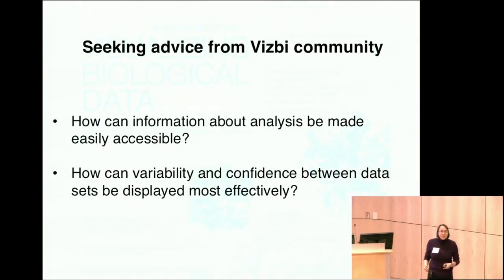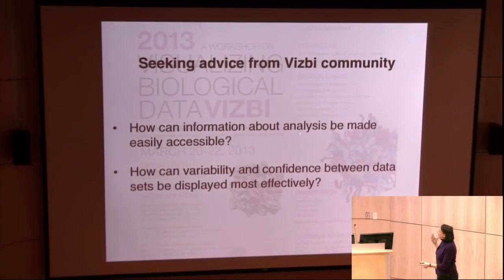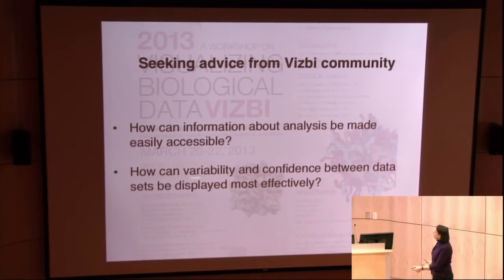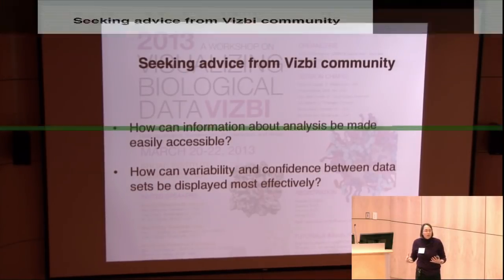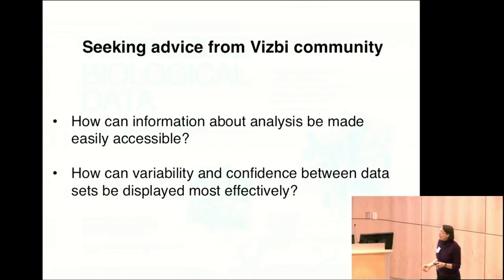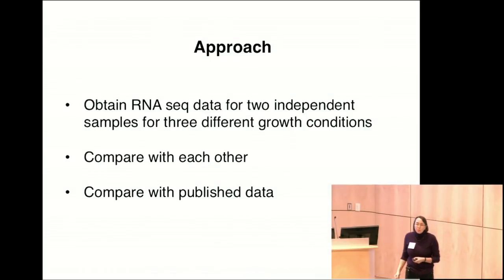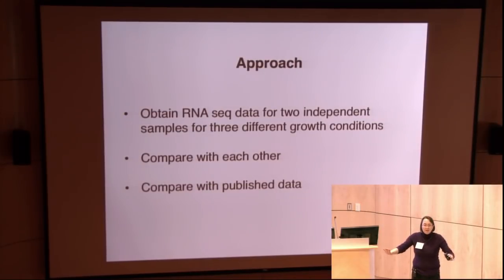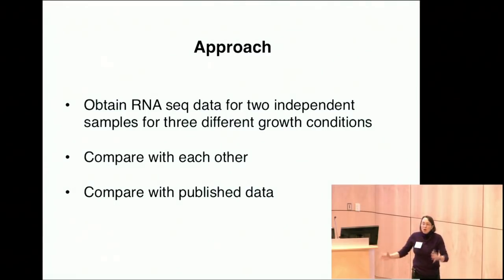The questions we would like advice on are: how can information about analysis be made easily accessible in a way that can be used? How can variability and confidence between data sets be displayed or captured most effectively? We are studying this very simple problem of E. coli. The approach we've taken is to obtain RNA-seq data for two independent cultures grown under three different conditions, comparing the data with each other and with published data.